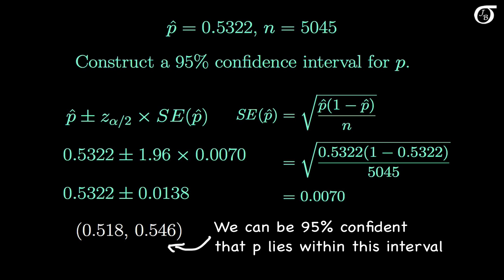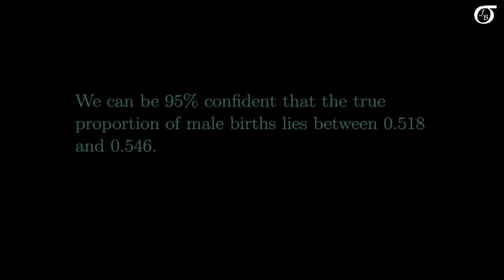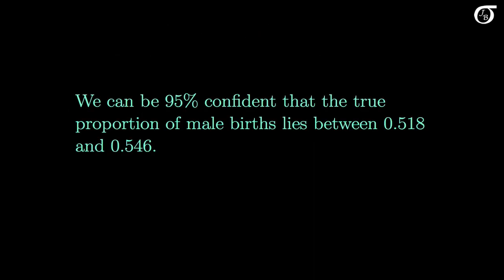We can be 95% confident that the parameter P lies somewhere in that interval. This means we can be 95% confident that the true proportion of male births lies between 0.518 and 0.546. This is for births to non-smoking parents in Liverpool. The entire interval lies to the right of 0.5, giving a pretty strong indication that the true proportion of male births is greater than 0.5.